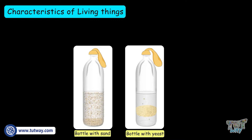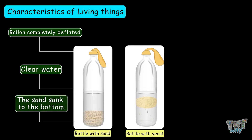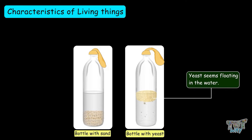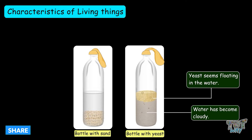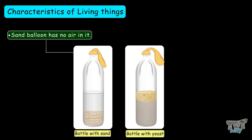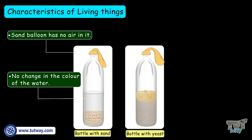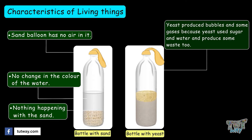Now, look at the following picture. In the sand bottle, the sand has sunk to the bottom. No changes were visible in the bottle — the water is clear, and the balloon is completely deflated with no air in it. In the second bottle, the yeast seems to be floating in the water. The water has become cloudy, and some bubbles have risen to the top, and the balloon seems to be filled with some air.